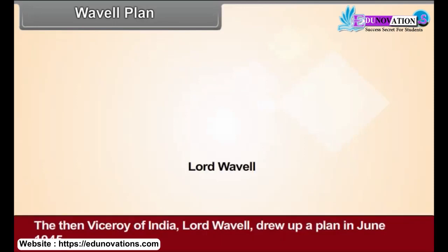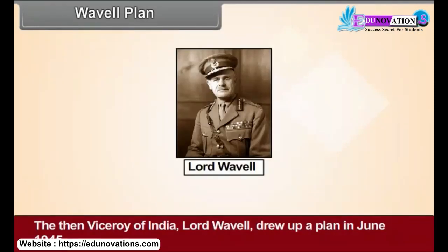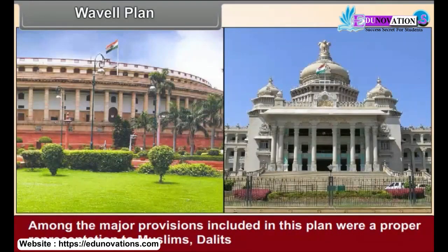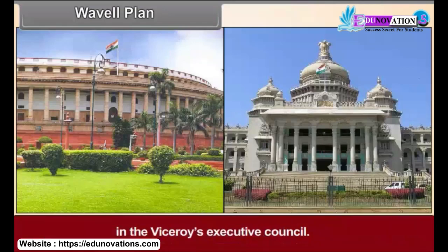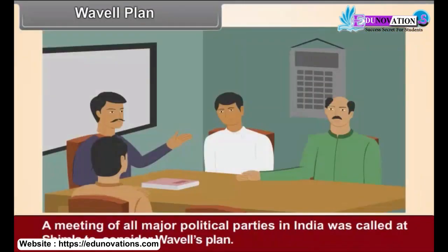Wavell Plan: The then Viceroy of India, Lord Wavell, drew up a plan in June 1945. Among the major provisions included in this plan were proper representation to Muslims, Dalits and the minorities in the central and provincial legislatures, and an equal number of Hindu and Muslim members in the Viceroy's Executive Council. A meeting of all major political parties in India was called at Shimla to consider Wavell's plan.